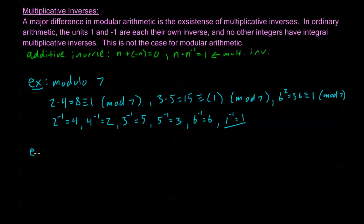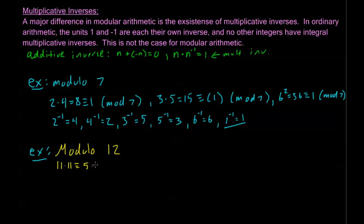Let's look at modulo 12. Modulo 12 is a little bit different. Where 7 was prime so everything had an inverse, modulo 12 that's not going to be the case. If I look at 11 times 11 — this is going to be congruent to 121, and when I divide by 12 my remainder is 1. Similarly 5 times 5 is 25, which is 24 plus 1; and 7 times 7 is 49, which is 48 plus 1. So these are all congruent to 1 mod 12.